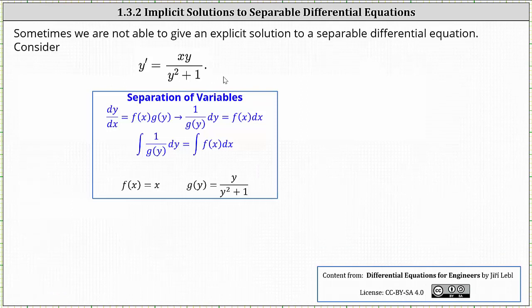The first thing to recognize is we have a separable differential equation because the equation fits the form dy/dx equals f of x times g of y, meaning the right side is a function of x times a function of y. Analyzing the right side, notice f of x is equal to x, and g of y is equal to the rational function y divided by the quantity y squared plus one.